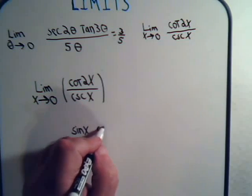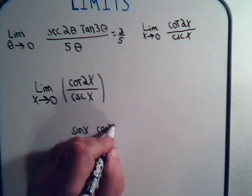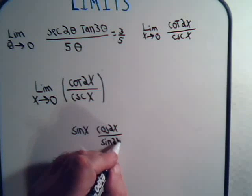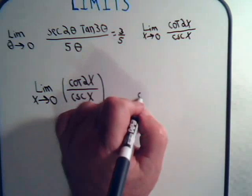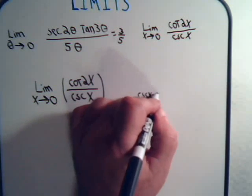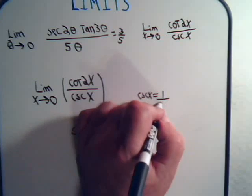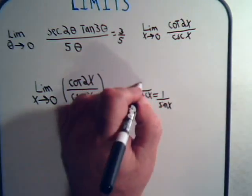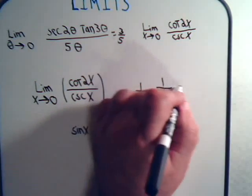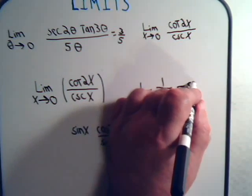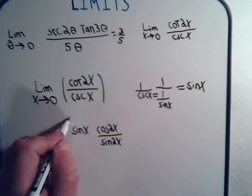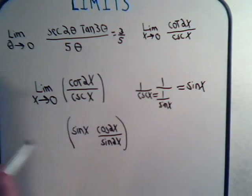And the cotangent, that's the cosine of 2x divided by the sine of 2x. Again, the cosecant is 1 over the sine of x. And I've got 1 over this, which is 1 over that, which is the sine of x. So that ends up here in the numerator. Okay, so we want to take now this limit.